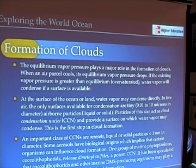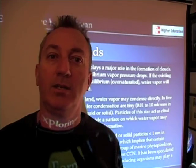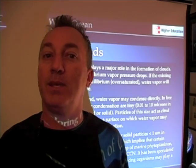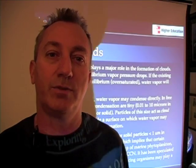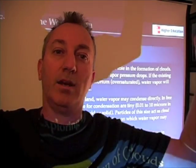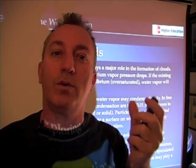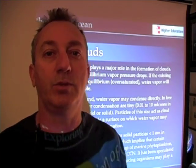Water vapor on the surface of the land or ocean may condense directly. Where there's a surface, such as a tree or your car, water vapor can condense directly from the atmosphere onto your car, onto leaves of grass, or onto a surface like that. But up in the air, there's really nothing for that water vapor to condense upon — well, as it turns out, there is something for it to condense upon.